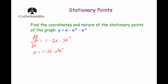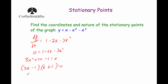Since dy/dx equals zero at stationary points: 0 equals 1 minus 2x minus 3x squared. Bringing everything to the left to make x squared positive: 3x squared plus 2x minus 1 equals 0. Factorizing: (3x − 1)(x + 1) equals 0, which gives x equals one third or x equals minus 1. We'll have a turning point at x = 1/3 and another at x = −1.